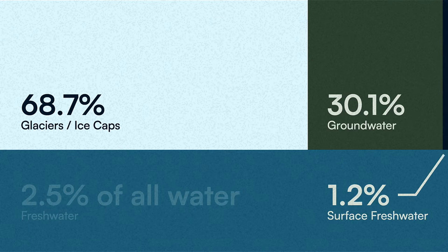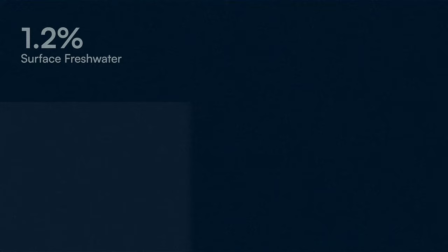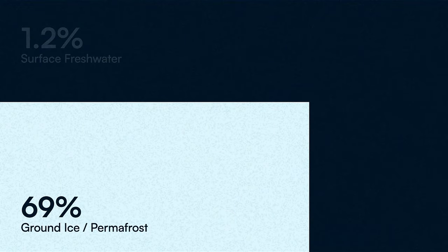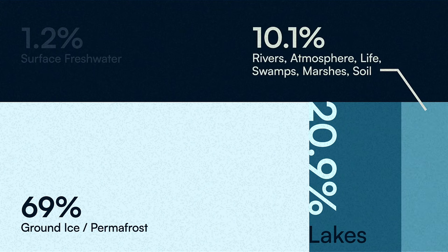Finally, 1.2% exists as surface freshwater — and remember, this is 1.2% of the total 2.5% of all water. So we're already talking about a tiny, tiny fraction of Earth's water existing as easily accessible surface freshwater. Digging into that further: 69% of it exists in ground ice or permafrost, currently frozen and not really accessible. An additional 20.9% is found in Earth's lakes, and the remaining 10.1% is scattered throughout Earth's rivers, in the atmosphere as water vapor, within living things, and in swamps, marshes, and surface soil.